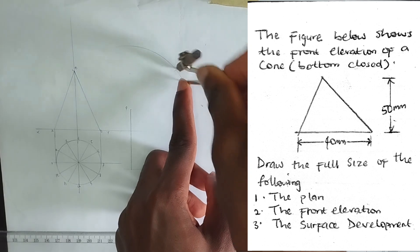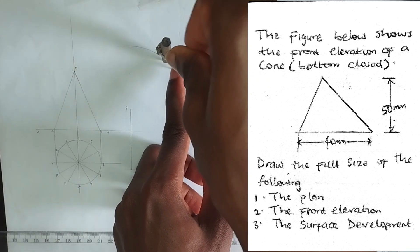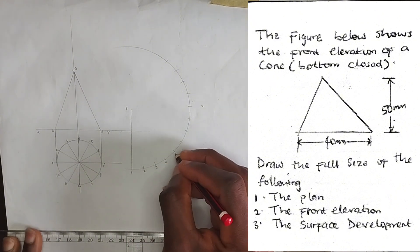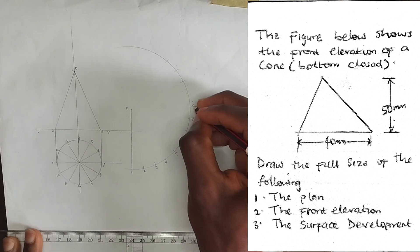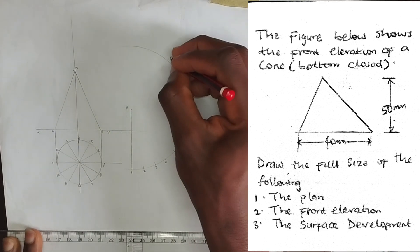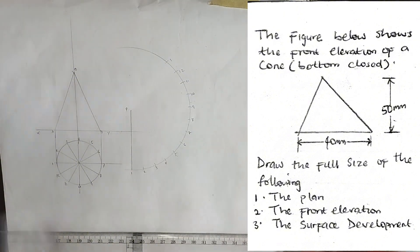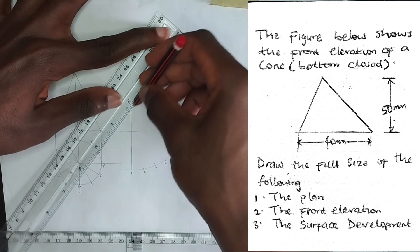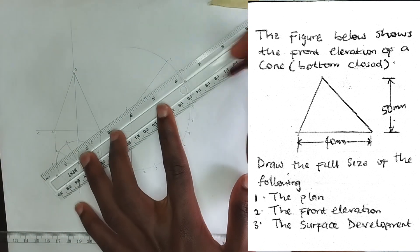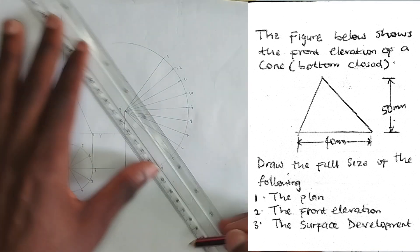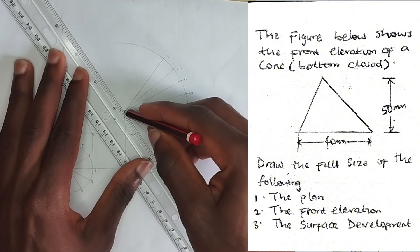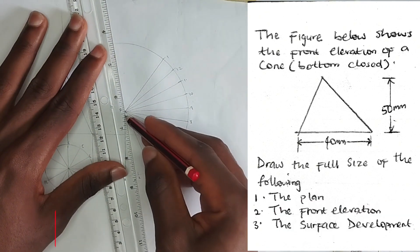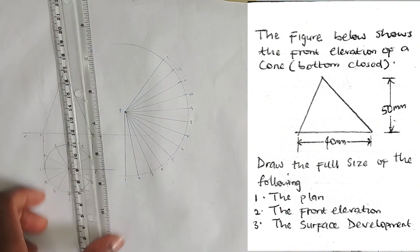I label the points: one, two, three, four, five, six, seven, eight, nine, ten, eleven, twelve, and back to one. Now I join all these points to point P, starting from here, to form the surface development.